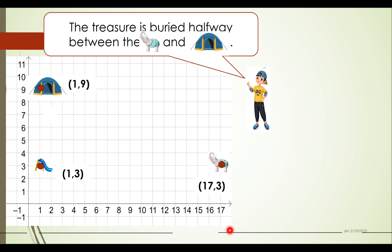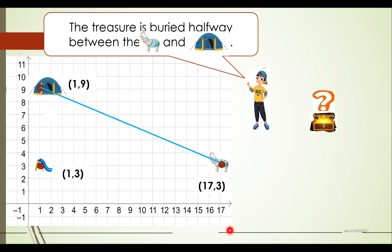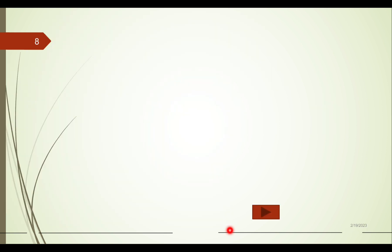Now, what if the treasure is buried halfway between the elephant statue and the tent? That means we have a diagonal from the tent to the elephant statue. We cannot exactly count the distance, so it is important that at this point we derive how to determine the coordinates of the midpoint — which is another word for 'halfway.'